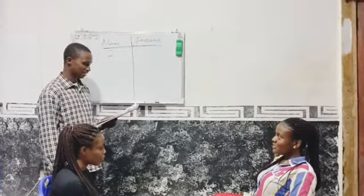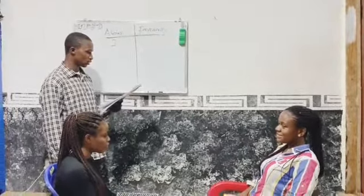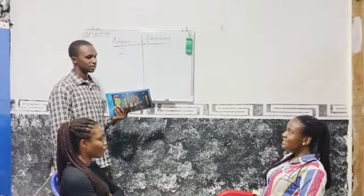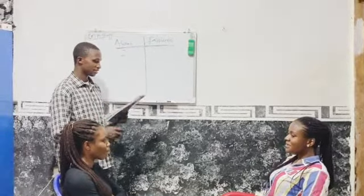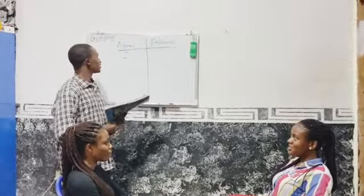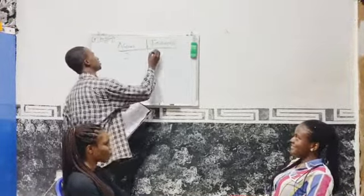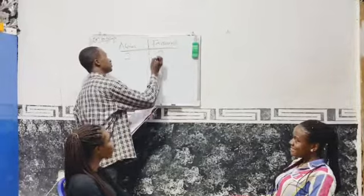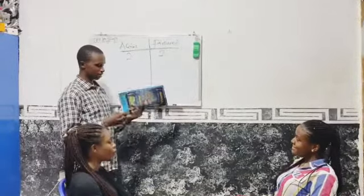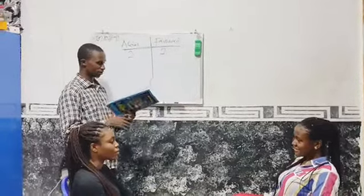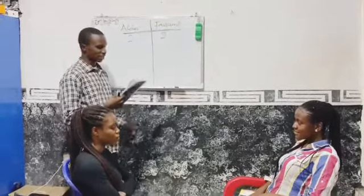Question five: list two types of spinal bifida. The answer given was spinal bifida cystica and spinal bifida occulta. That's very correct — spinal bifida cystica and spinal bifida occulta.